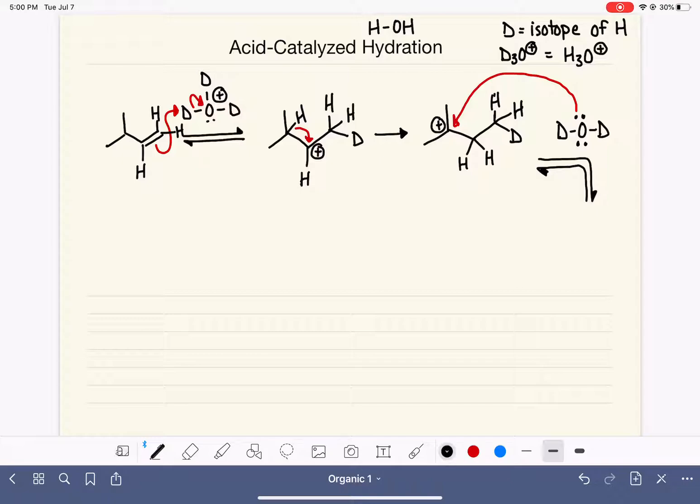So we will end up with this guy. The lone pair of electrons were used to form this bond to carbon. So the bond to carbon is between carbon and the oxygen of the D2O. Oxygen still has one lone pair of electrons left, and because it has three bonds, it has a positive formal charge.